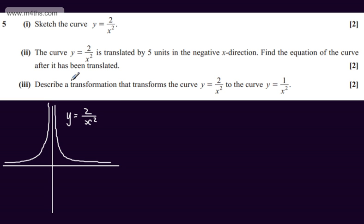In the second part, again for two marks, we're told the curve y is equal to 2 over x squared is translated by five units in the negative x direction. We're asked to find the equation of the curve after it's been transformed.